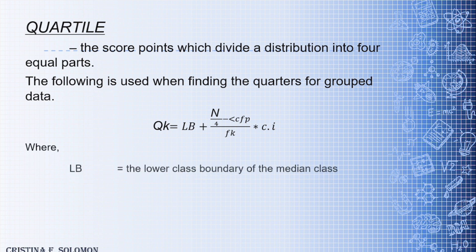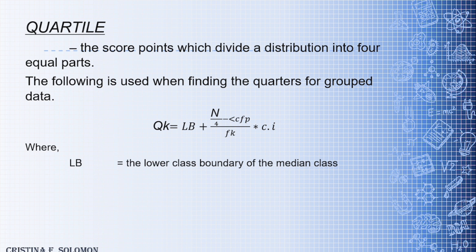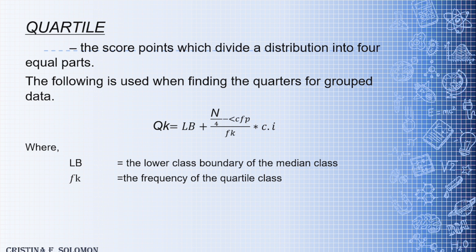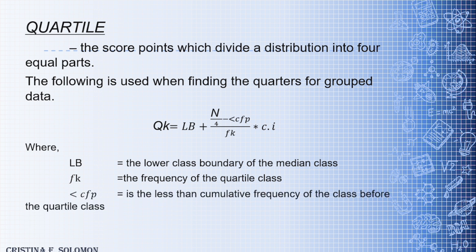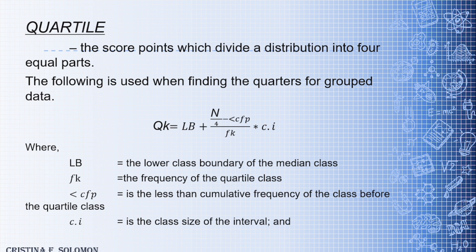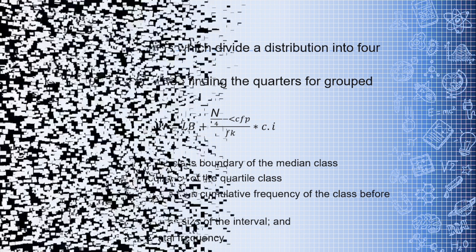In this formula, LB is the lower class boundary of the quartile class. FK is the frequency of the quartile class. Less than CFP is the less than cumulative frequency of the class before the quartile class. CI is the class interval, and N is the total frequency.